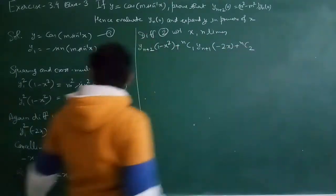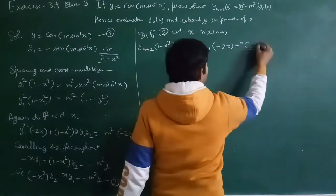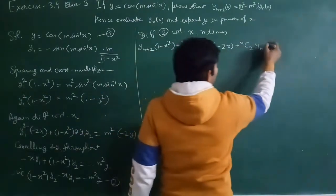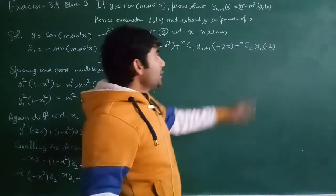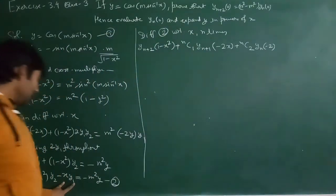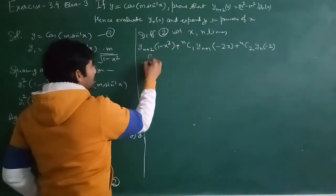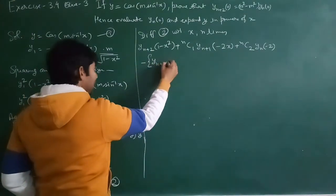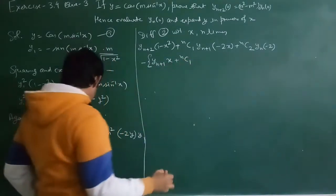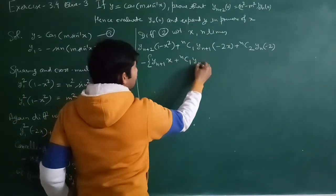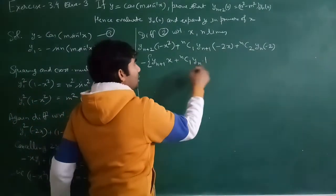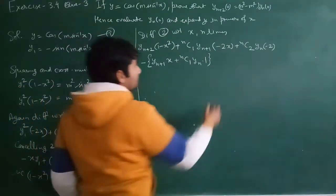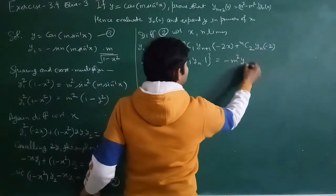Next, nC2·yn·(-2) appears; further derivatives vanish. For the -xy1 term: differentiating n times gives -[x·yn+1 + nC1·yn·1]. The right-hand side, -m²y differentiated n times, gives -m²·yn. So the full expanded equation is obtained.